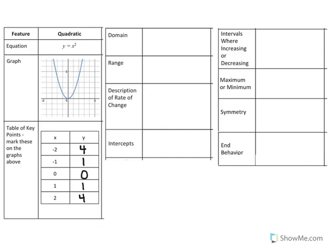If we mark those points on the graph as requested, we have 0, 0, negative 1, 1, and 2, 4 – or negative 2, 4 – that must mirror those points.